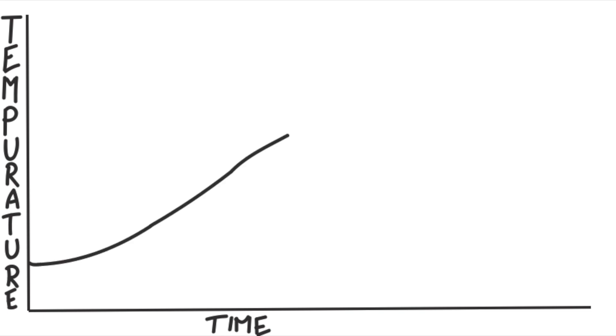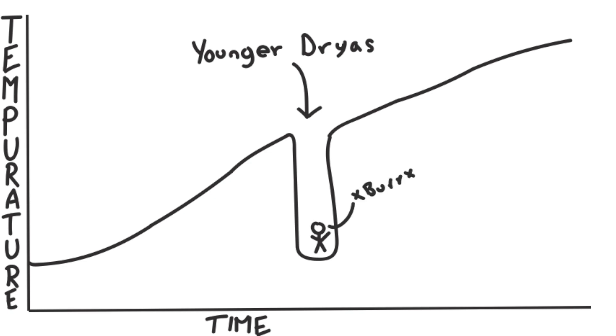Climate change can happen really fast, and that's what the people of Northern Europe found out during the Younger Dryas, which occurred about 14,000 years ago.